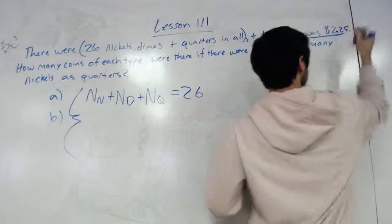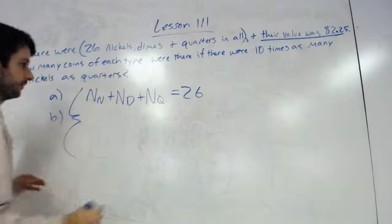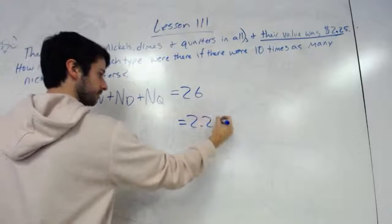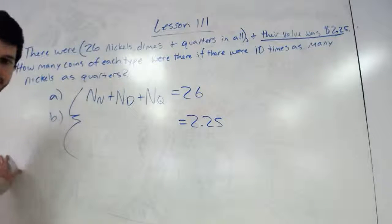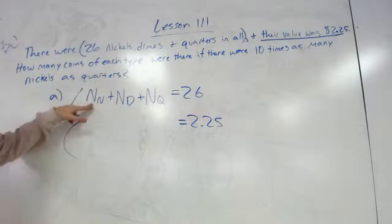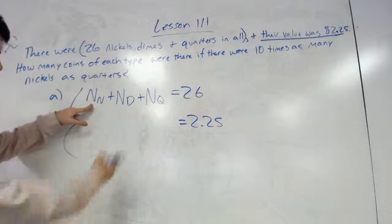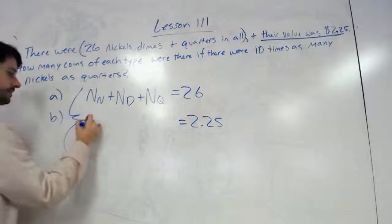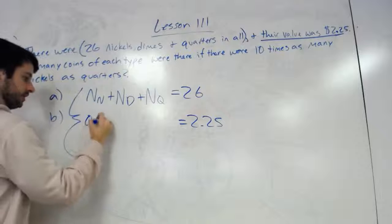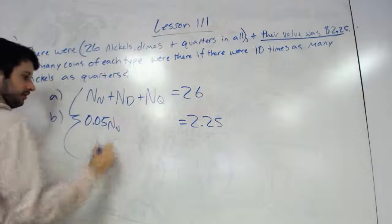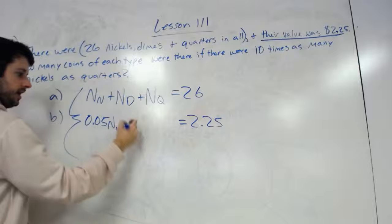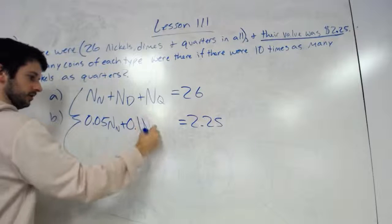So if I put 2.25 because that's their cost, well we know the value of a nickel in relation to $2.25 is 0.05 for nickels, a dime is 0.1 and a quarter is 0.25.